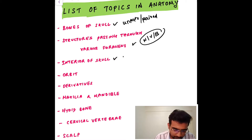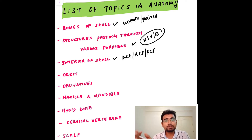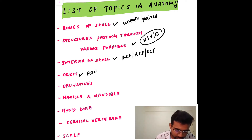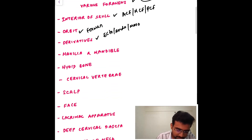The next topic is the interior of the skull — the anterior cranial fossa, the middle cranial fossa, and the posterior cranial fossa. You should definitely remember the structures present there. The next topic is the orbit — the foramina related to the orbit, the vessels and structures passing through it, and the ectodermal, endodermal, and mesodermal derivatives.